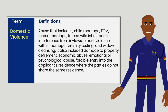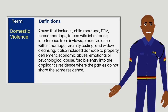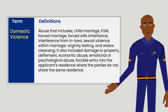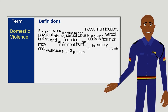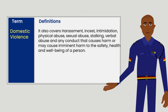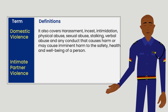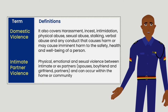Domestic violence: abuse that includes child marriage, FGM, forced marriage, forced wife inheritance, interference from in-laws, sexual violence within marriage, virginity testing, and widow cleansing. It also includes damage to property, defilement, economic abuse, emotional or psychological abuse, possible entry into the applicant's residence where parties do not share the same residence, harassment, incest, intimidation, physical abuse, sexual abuse, stalking, verbal abuse, and any conduct that causes harm or may cause imminent harm to the safety, health, and well-being of a person. Intimate partner violence: physical, emotional, and sexual violence between intimate or ex-partners — spouses, boyfriend, girlfriend, and partners — and can occur within the home or community.